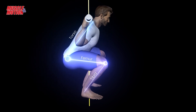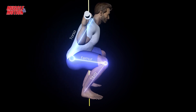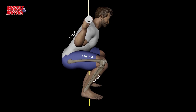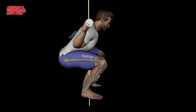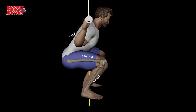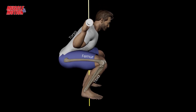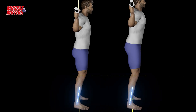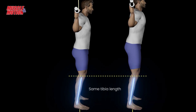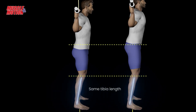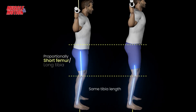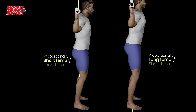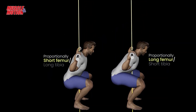Individuals with longer femurs relative to their tibia and torso often find squatting more challenging. They may need to lean their torso forward more to maintain balance. For example, these two exercisers have the same length of tibia and torso, but one has a longer thigh.